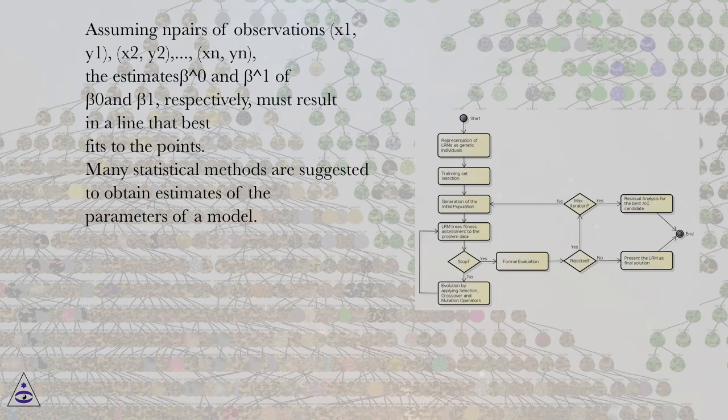Assuming n pairs of observations (X1,Y1), (X2,Y2),...,(Xn,Yn), the estimates beta hat 0 and beta hat 1 of beta 0 and beta 1, respectively, must result in a line that best fits to the points.